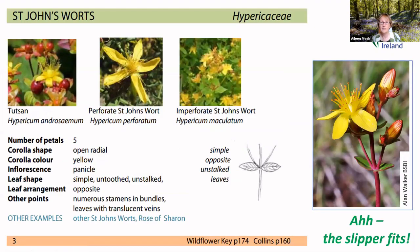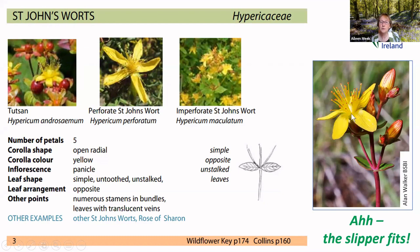The pictures certainly look similar to our flowers — a little bit of snap, but let's go through the description and check. St John's Wort: five petals, open radial, yellow, a panicle. The leaves are simple, untoothed, unstalked, and opposite. Other key points: numerous stamens in bundles, leaves with translucent veins — you can't see that here, but with your hand lens and careful attention to the features you would be able to distinguish these and decide whether that is the case.